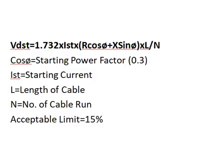The starting current depends on the motor starter type — whether it is direct online starting, soft starting, or VFD starting. If it is direct online starting, the starting current is generally six times the continuous full load current rating, and with a 20 percent margin, it becomes 7.2 times the rated full load current. The cosφ power factor used here is the starting power factor, which is typically 0.3.